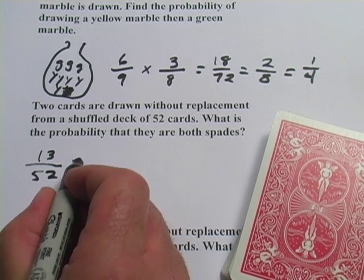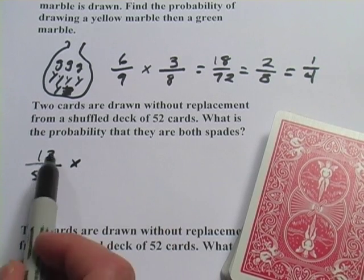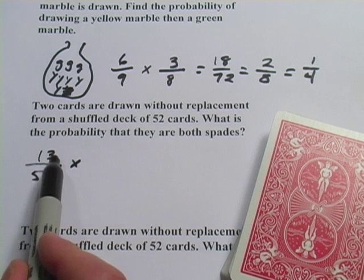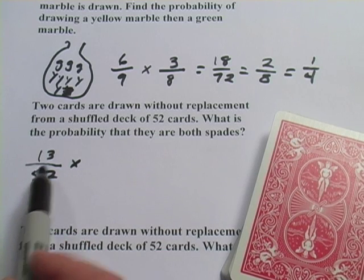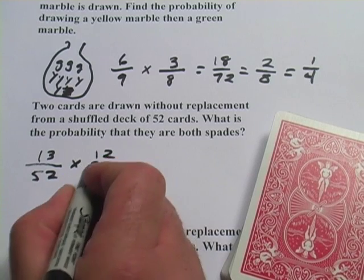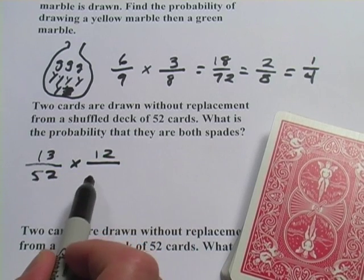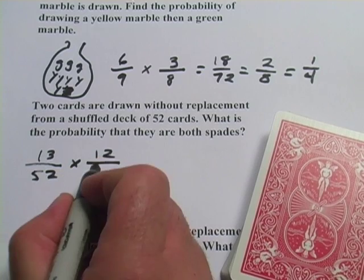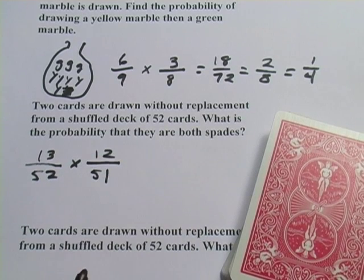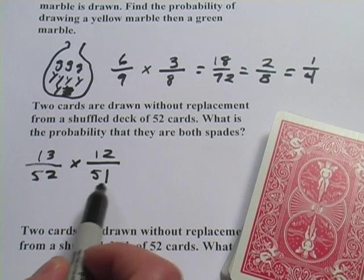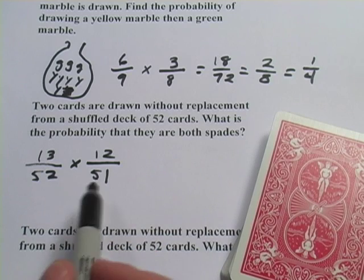The second time you pull a card out of here, both these numbers will have changed. If you drew a spade the first time, there are only 12 spades left in that deck. And since you drew a card, there are only 51 cards left in that deck. So it's 12 out of 51, the probability of drawing that second spade.